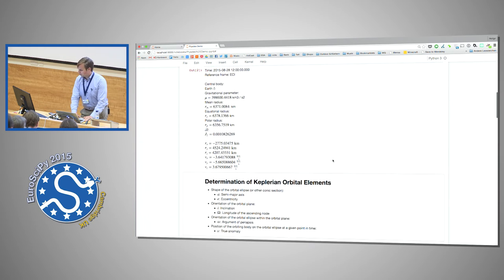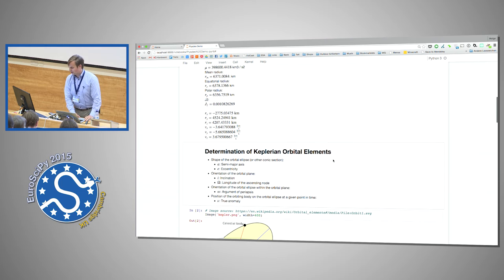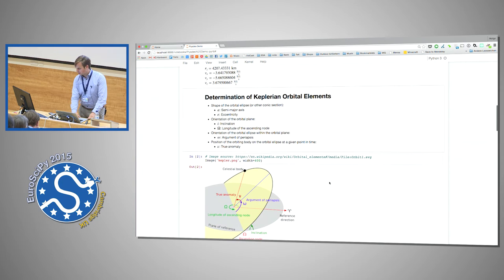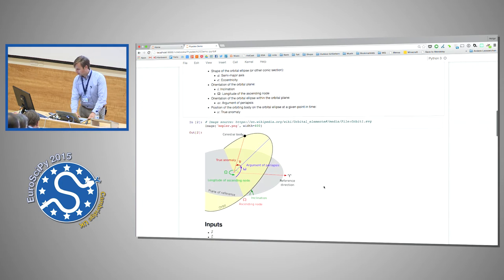So we need some more information. So the first thing you do to determine how the orbit looks like is to calculate the Keplerian or classical orbital elements. So we want to describe the shape of the orbital ellipse. For that we need the semi-major axis and the eccentricity, so how oval the ellipse is. Then a few angles. And I have a picture here.